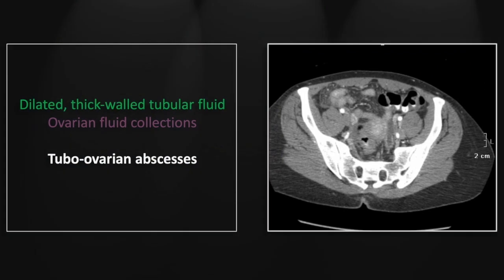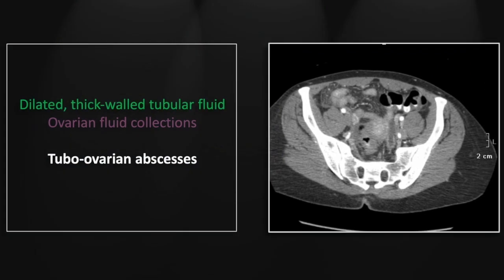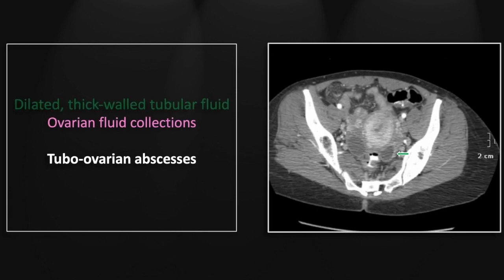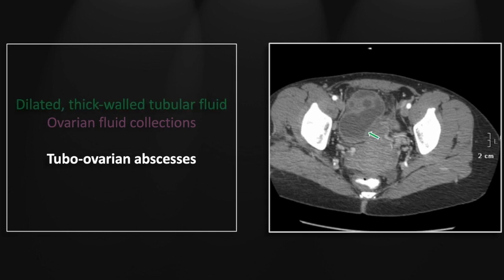Our next case is a bilateral tubo-ovarian abscess. You can see the left tube is dilated right up to its end, and typically the ends of the tubes are more dilated than the bodies. On the right ovarian side, there is a well-circumscribed fluid collection, and more inferiorly you can really appreciate the dilated tortuous tubular structure, probably with a debris or hemorrhage level dependent within it.